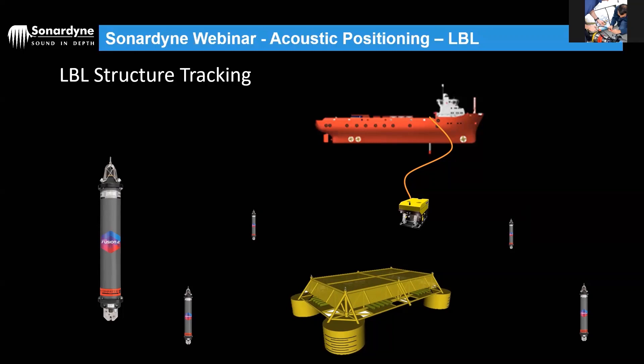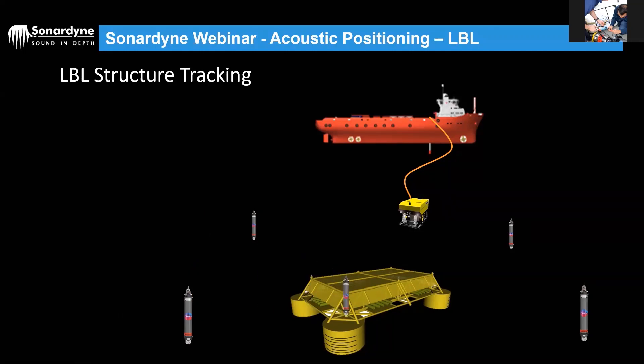The main purpose of LBL is placing infrastructure on the seabed — large structures during the construction and survey phase of oil and gas projects. To position a structure that's not tethered with a comms line, we place a mobile transponder on the structure and use the ROV to relay communications to it. The ROV sends signals acoustically to the beacon on the structure, which then interrogates the array.